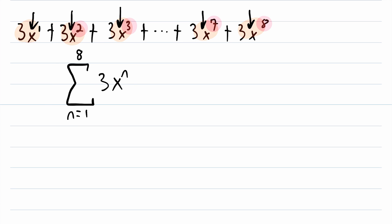This is the sum of three times x to the power of n from n equals one to n equals eight, and it's equal to this. And I don't know about you, but I think this is a much nicer way of writing it out. And don't get me wrong, there are some instances where you might want to write it out this way, but this is also a very nice way to write it.